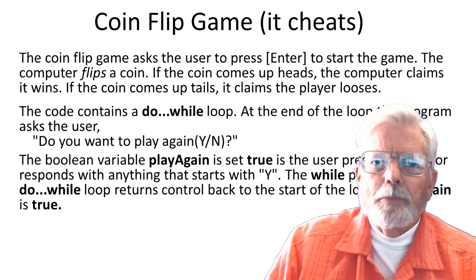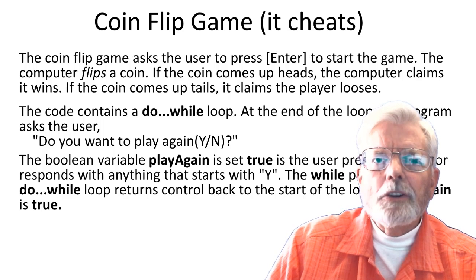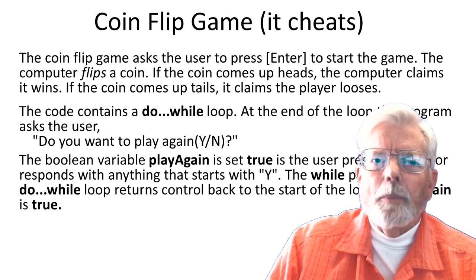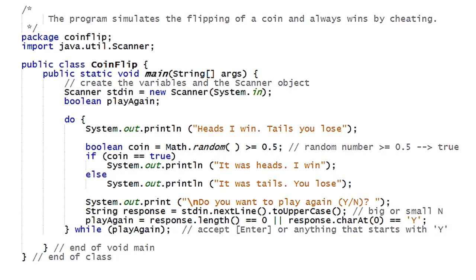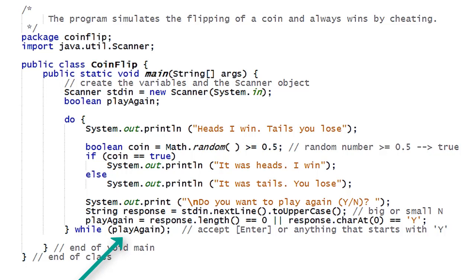Then it asks if the user wants to play again. The boolean variable 'playAgain' is set true if the user presses enter or responds with anything that starts with Y. The while part of the do-while loop returns control back to the start of the loop if playAgain is true. Line up the curly braces for the do and the while. Everything within this block of code is considered the body of the do-while loop. It will be executed at least one time and more times when the test condition of the while is true. Since this is a do-while loop, the game will be played at least once when the program starts.